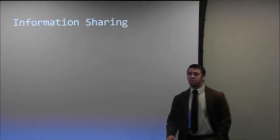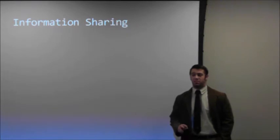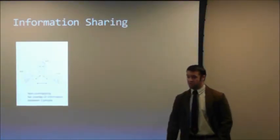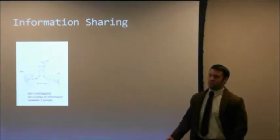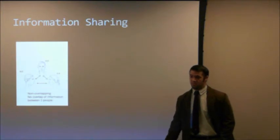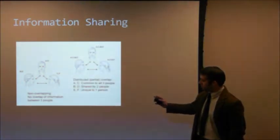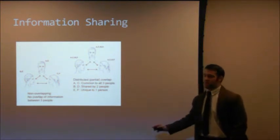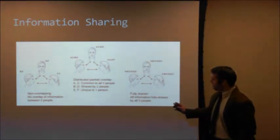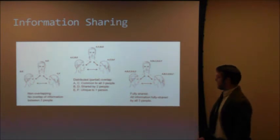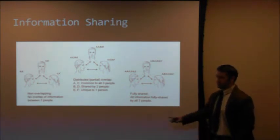In a team, there are three basic ways that information can be shared before the team even meets for the first time. We have non-overlapping information, here on the left, which occurs when no one in the team has the same information, and we have three completely different viewpoints. We also have distributed or partial overlap, which is in the middle, where some information is shared and some information is individually held. On the right here, we have fully shared information, which is the last of the three types, where all team members have identical information.